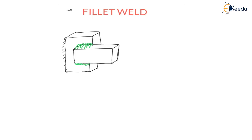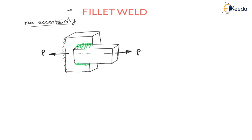Now, load is acting parallel to the weld. Force P is acting parallel to the load. Here I am assuming no eccentricity, meaning the load is passing through the CG. Later, we will assume eccentricity and derive the derivation. No eccentricity means there will be no bending moment.